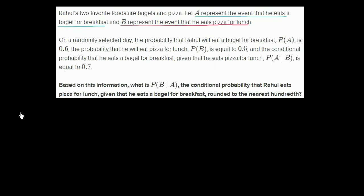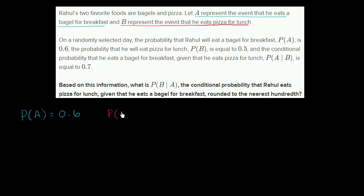So the probability that he eats a bagel for breakfast is 0.6. The probability that he will eat pizza for lunch — probability of event B — is 0.5.